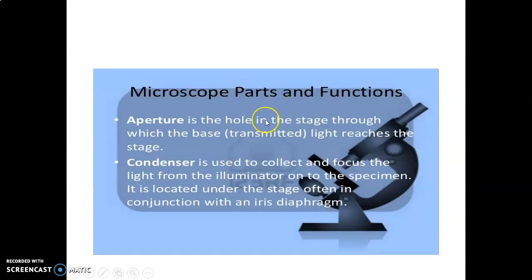The aperture is a hole in the stage through which the base light reaches the stage. You'll have a light at the base, but there will be an aperture to get to the stage where the specimen is.